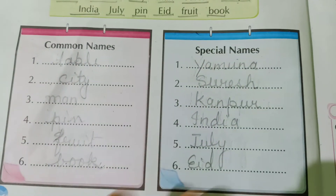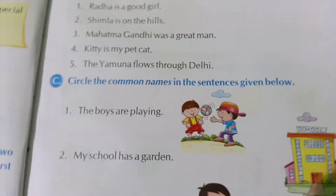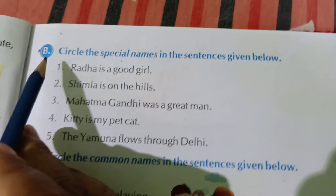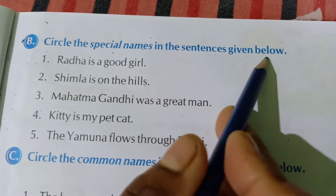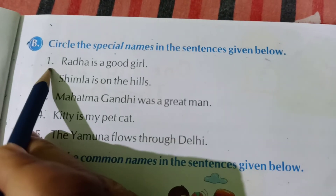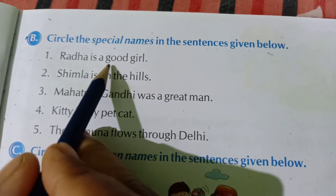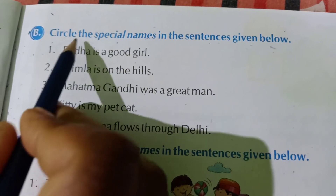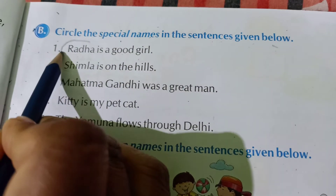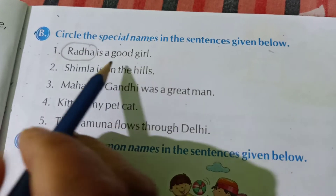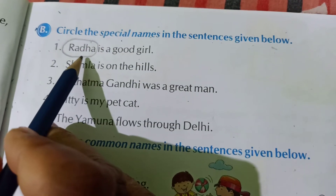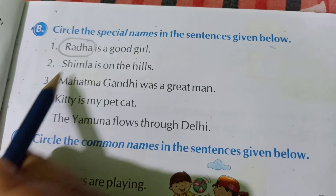Next exercise is Exercise B. Circle the special names in the sentences given below. One: Radha is a good girl. Radha is a special name of a girl, so circle 'Radha'.